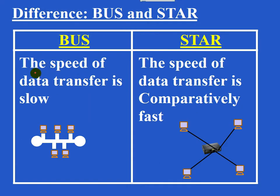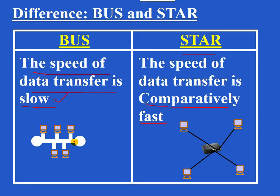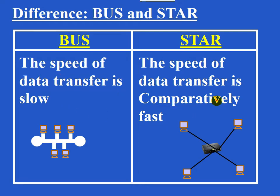The speed of data transfer is slow in BUS topology and comparatively fast in star topology. Why is it slow in BUS topology? Data can travel only through a single cable, so at a time only one host can send data. This is comparatively slow when compared to star topology.